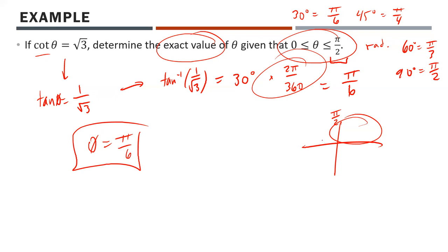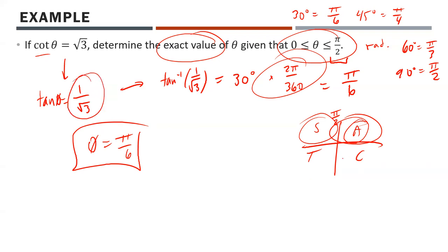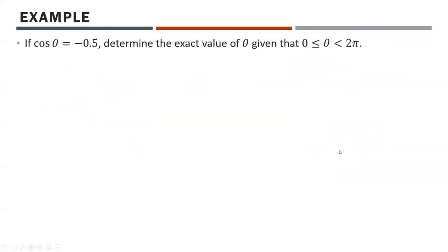If we had a different domain that included two different quadrants, there's a potential we'd have to use two different angles using the CAST rule. All angles should be positive in the first quadrant, and our trig ratio — tan theta equals 1 over root 3 — is a positive number, so we're good in that quadrant.